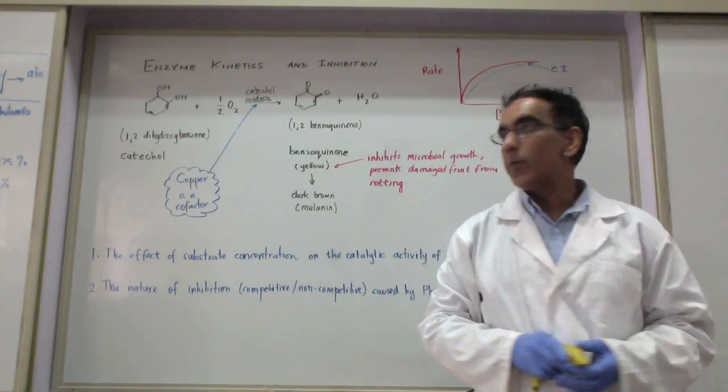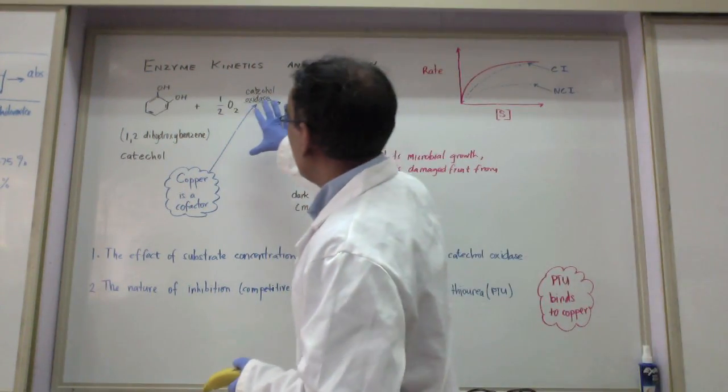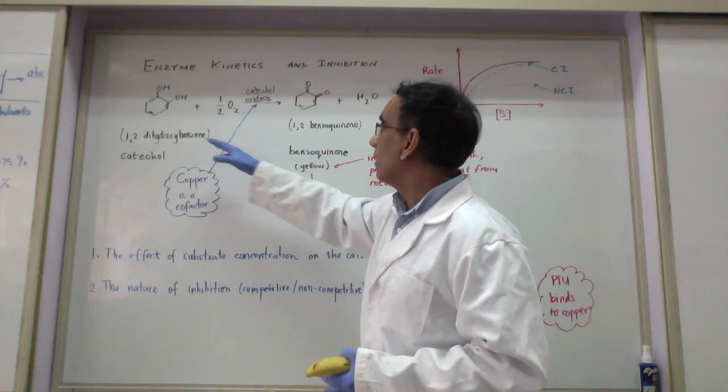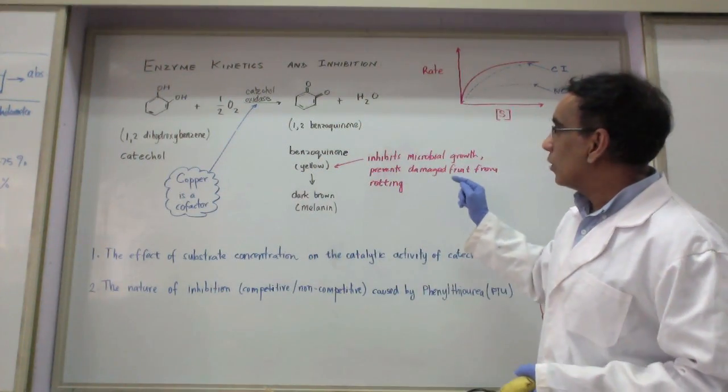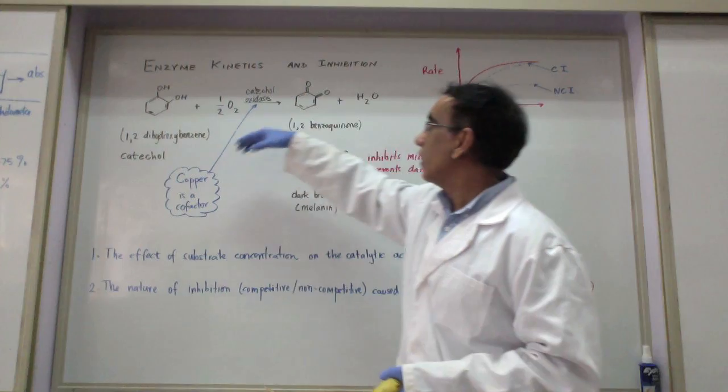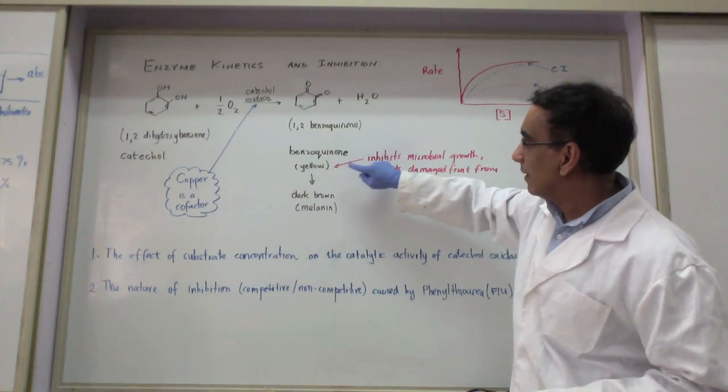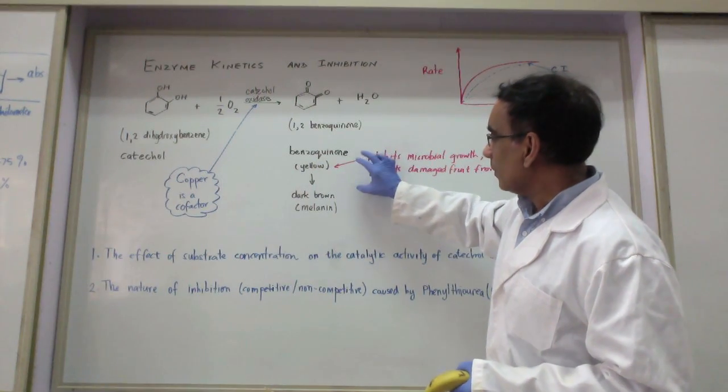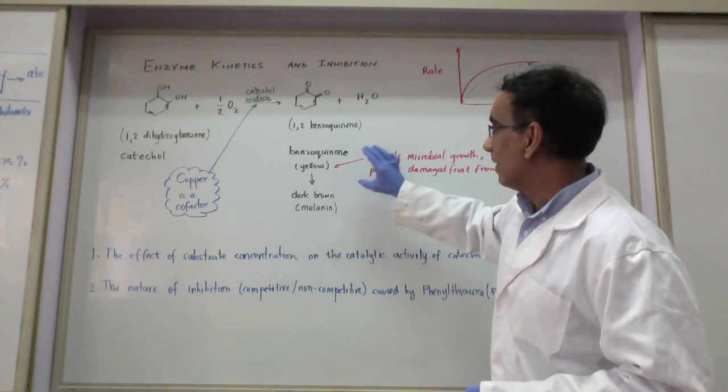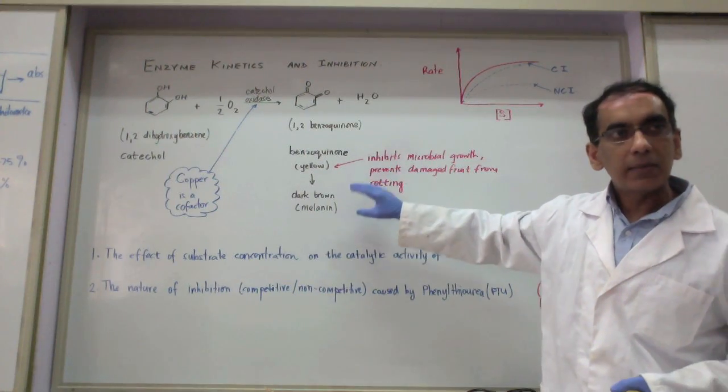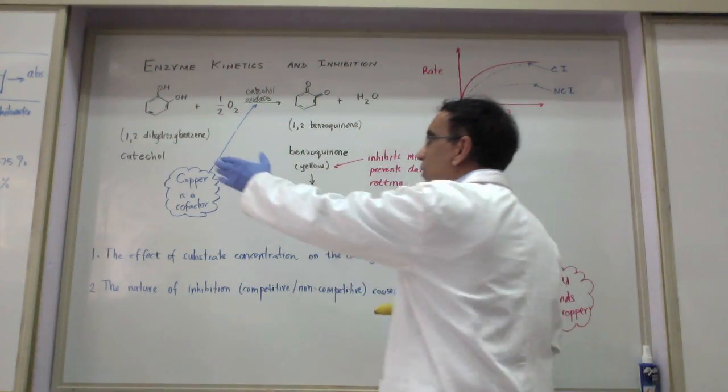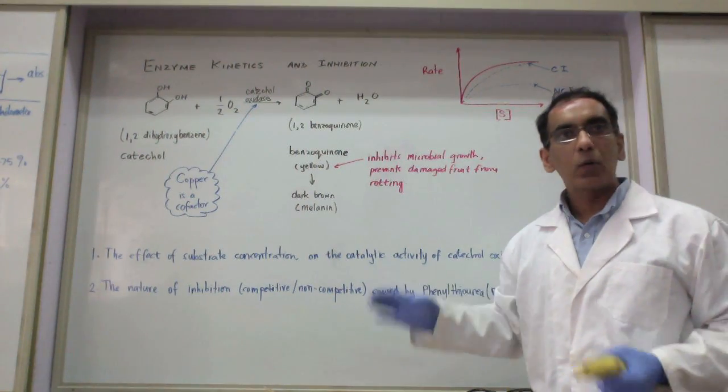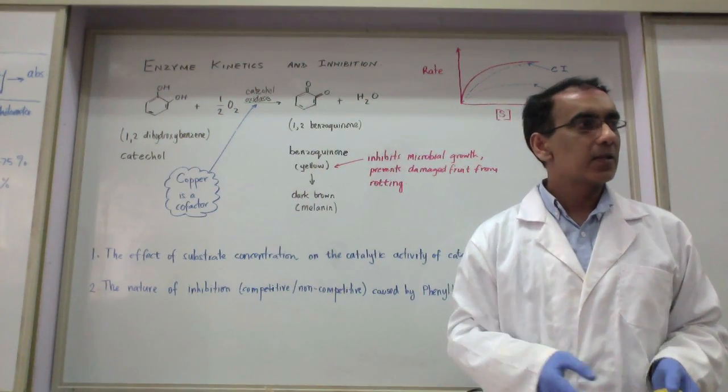If we extract the enzyme like we did today from bananas and put the enzyme in with the substrate, then we'd be able to investigate how changing the substrate concentration affects the rate of catalysis. We'll have to measure the disappearance of one of the reactants or the rate of appearance of the product. Here the product is something that is a bit yellowish in color and then as soon as it gets exposed to the air, it goes to dark brown. This is what we call a precursor of melanin.